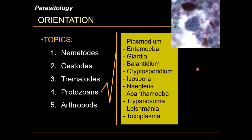For protozoans, you have Plasmodium, which causes malaria; Entamoeba; Giardia; Balantidium; Cryptosporidium; Isospora; Naegleria; Acanthamoeba; Trypanosoma; Leishmania; and Toxoplasma. The picture in the upper right-hand corner is an example of Entamoeba histolytica, which causes typical amoebiasis.